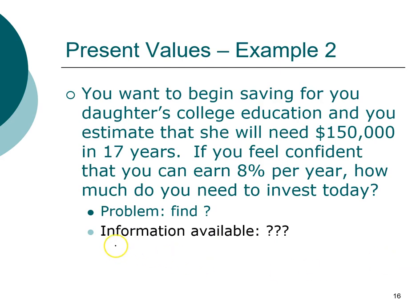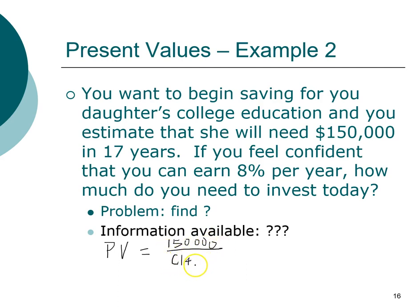We can use one of two approaches to solve this problem. The first is using the formula. Present value equals the future value — in this case $150,000 — divided by (1 + 0.08) raised to the power of 17 years. That turns out to be $40,540.